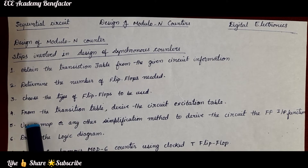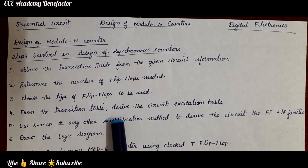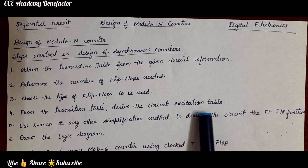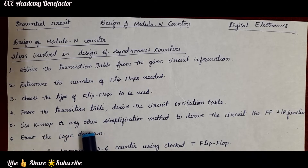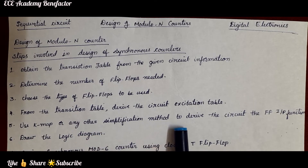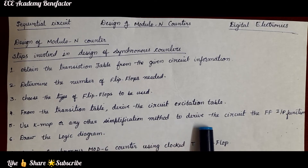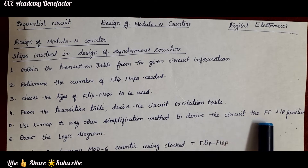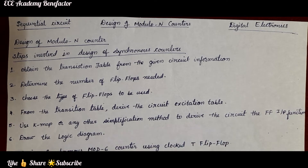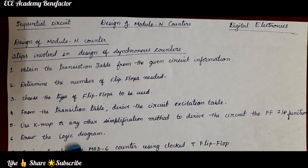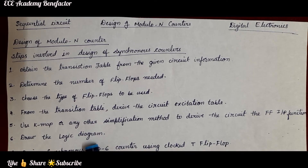The fourth step is to derive the circuit excitation table from the transition table. The fifth step is to use a K-map or any other simplification method to derive the flip flop input functions. The sixth step is to draw the logic diagram using the flip flops.